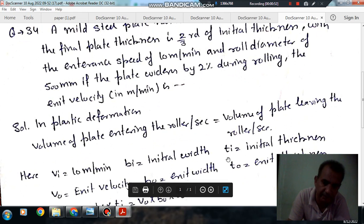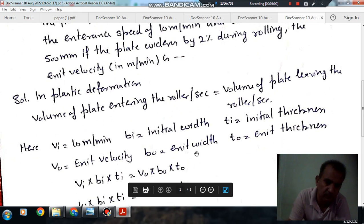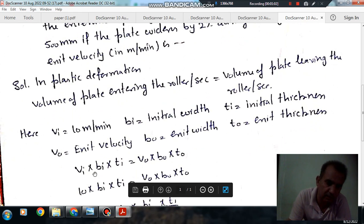Here, vi and bi are initial velocity and width, ti is initial thickness. v0, b0, and t0 are exit velocity, width, and thickness. So initial volume is vi × bi × ti, and final volume is v0 × b0 × t0.